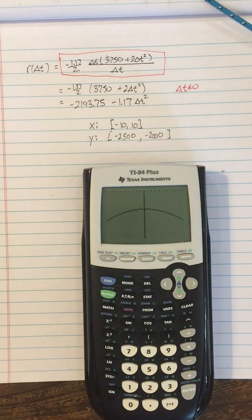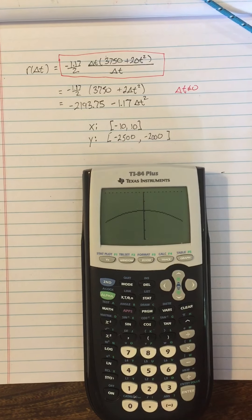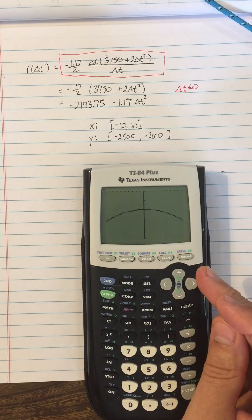Alright, so what feature is this graph not showing you? It's not showing you that there's a hole in this graph. A hole.